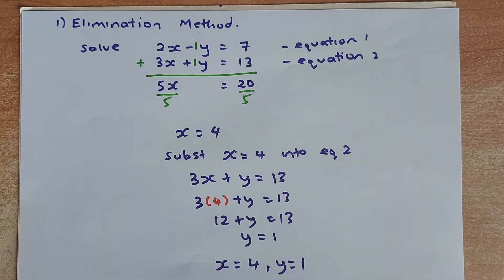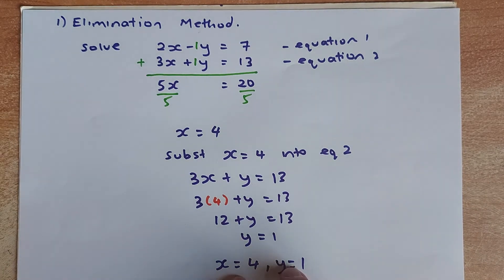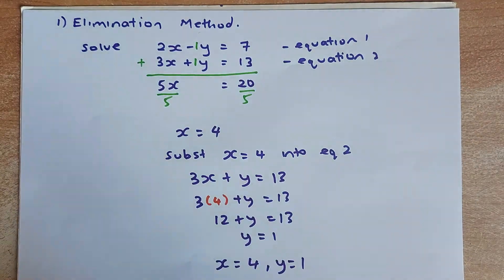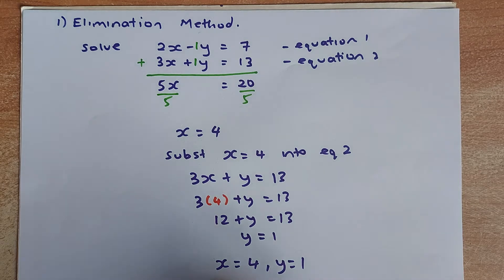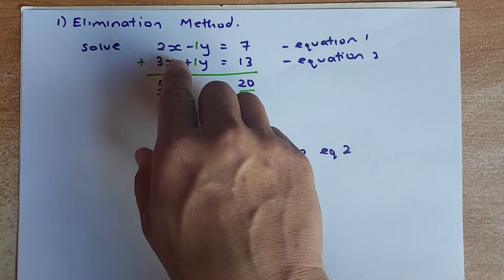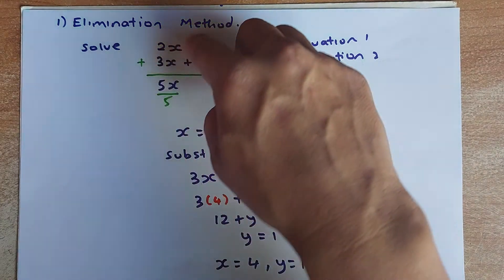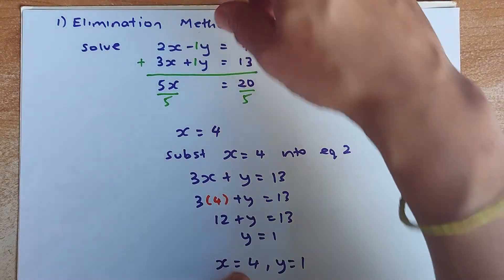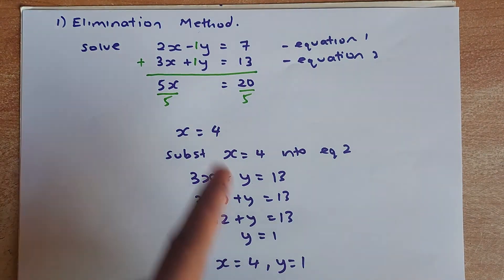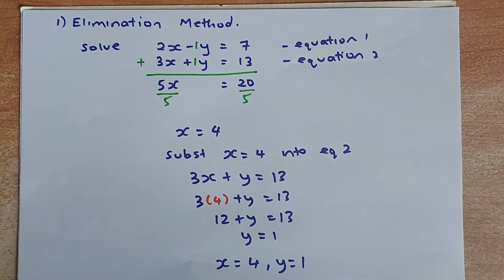To confirm, you can substitute these values into both equations. For example, substituting X equals 4 and Y equals 1 into the first equation: 2 times 4 is 8, and 8 minus 1 equals 7. You know you got it right.